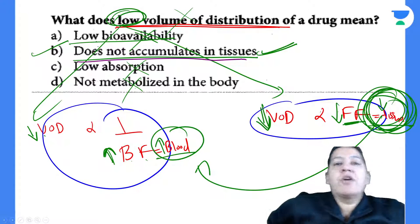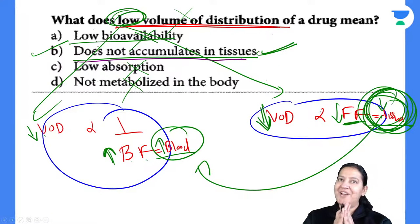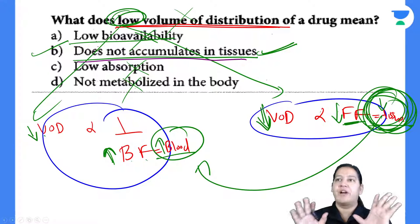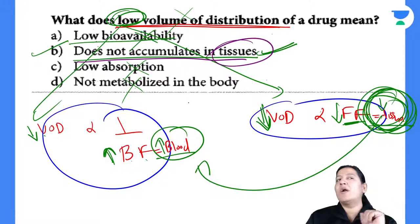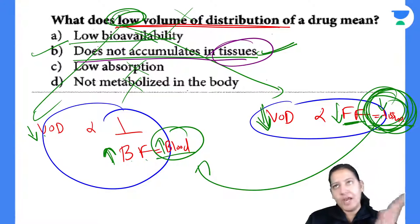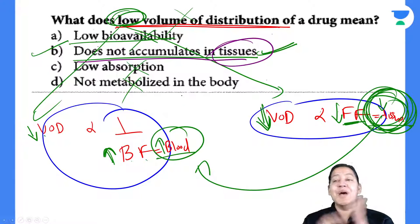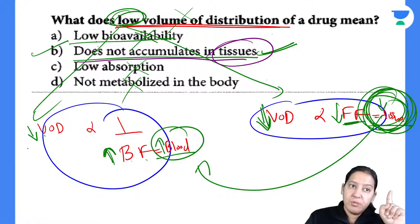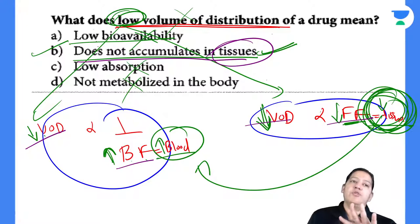Next question: apparent volume of distribution of the drug exceeds the total body fluid. Total body fluid in a normal human being is 5 liters, but the examiner says the volume of distribution is more than 5 liters. When does this happen? Apply the formula: volume of distribution = dose IV / plasma concentration (bound form stays in plasma). If volume of distribution is high, then bound form is low, free form is high.